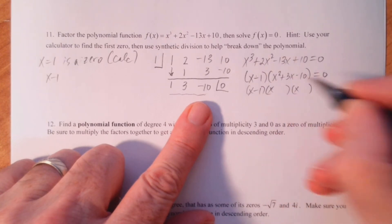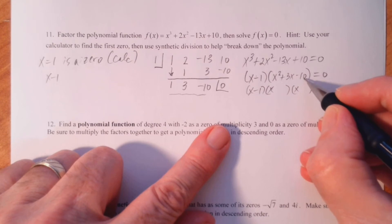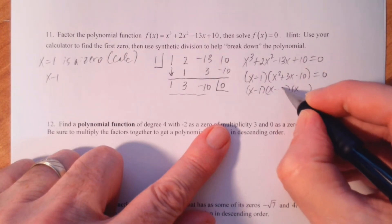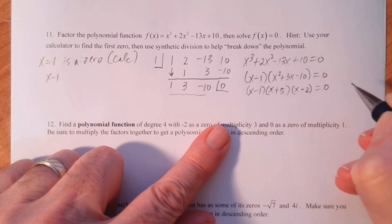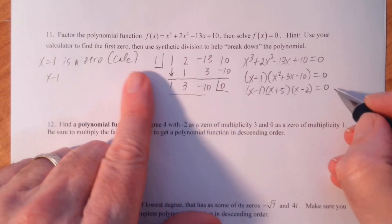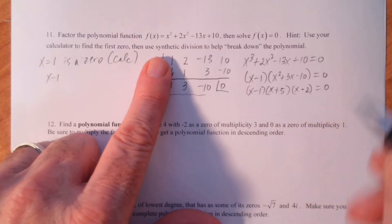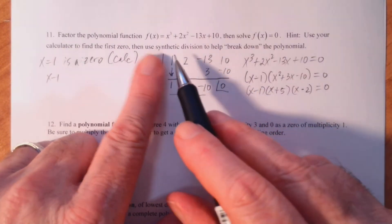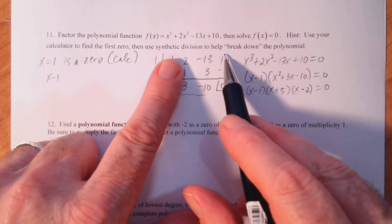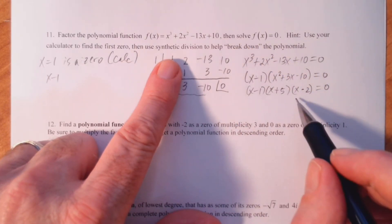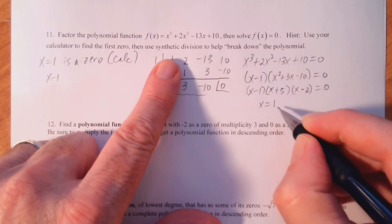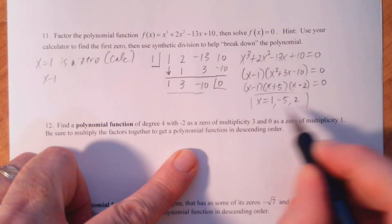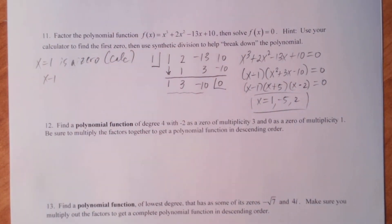This will be one x squared plus three x minus ten. We can factor this: x times x gives us x squared. We need two numbers that multiply to negative ten and add to three — that would be plus five and minus two. So we've broken it down into its factors. We need to solve this equation: x equals one, negative five, and two. That's what we're asked to do — solve. We also found the zeros.